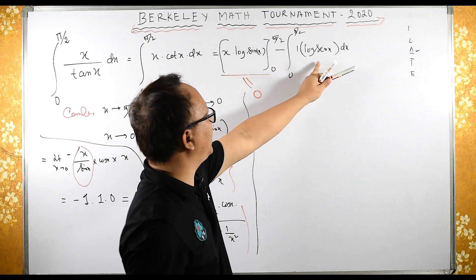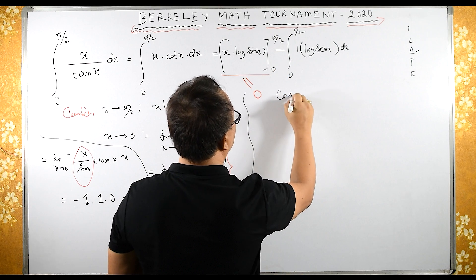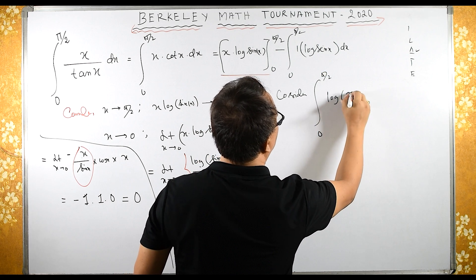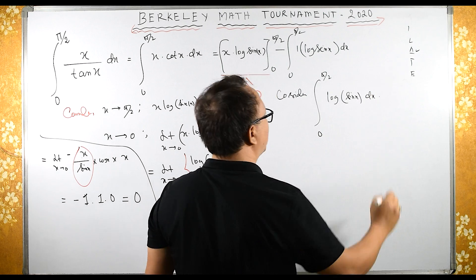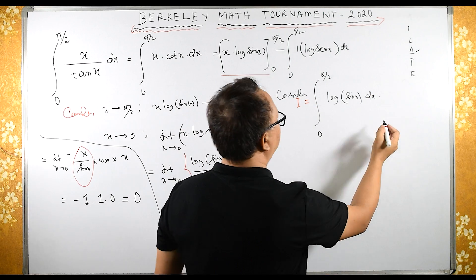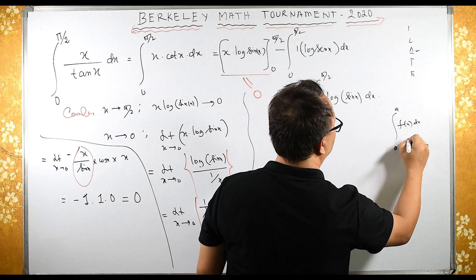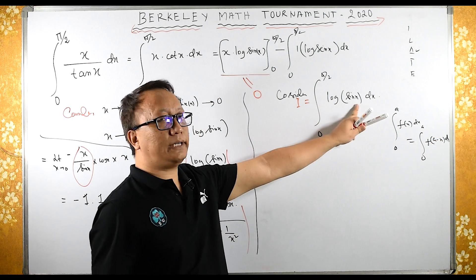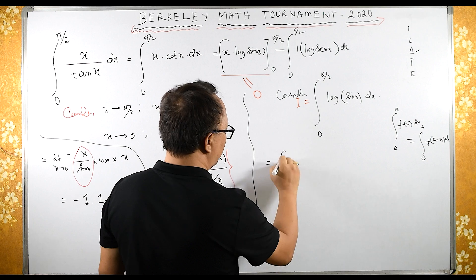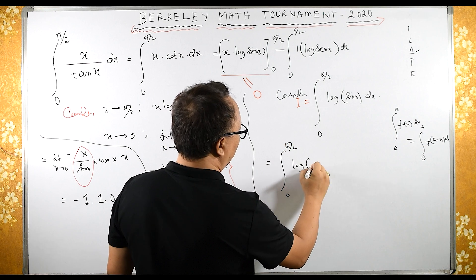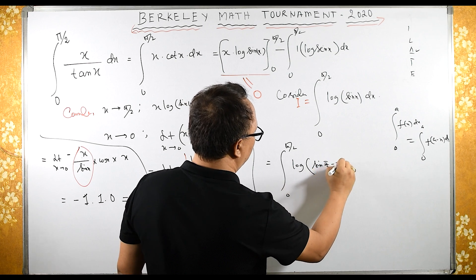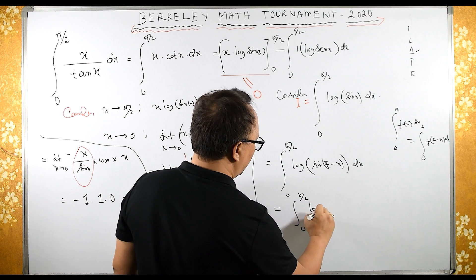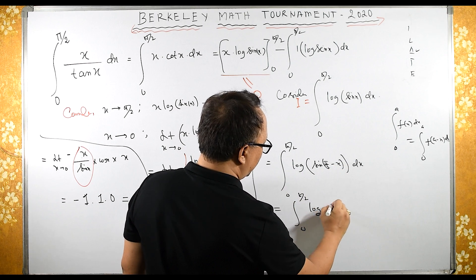Now let's consider this remaining integral. Let I = ∫₀^{π/2} log(sin x) dx. Using the property that ∫₀ᵃ f(x) dx = ∫₀ᵃ f(a−x) dx, I substitute π/2 − x, so this same integral equals ∫₀^{π/2} log(cos x) dx. This is also I.